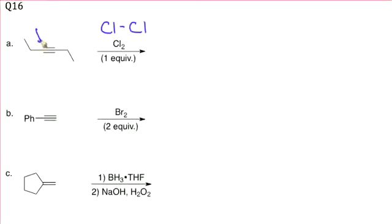What you have to remember is that in these additions we get that chloronium intermediate, which makes the chlorines add trans across that triple bond. So the triple bond becomes a double bond.